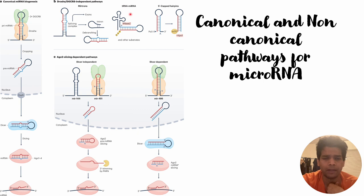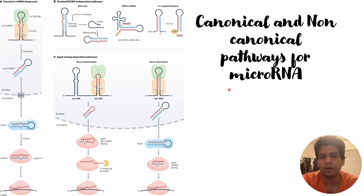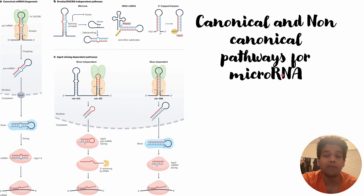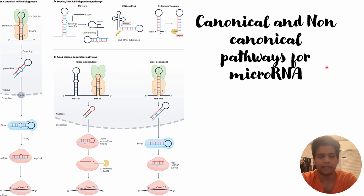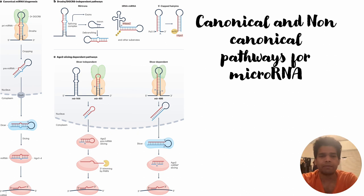This concludes the canonical pathway shown on the left side of the figure. We have also discussed the non-canonical pathways. This was a brief overview of how micro RNAs are formed by canonical and non-canonical pathways. If you need to understand more about micro RNA, you can refer to the references provided in the description. That's all for this video — thank you for your time.